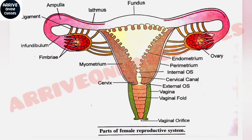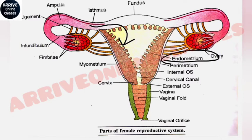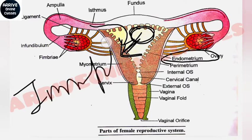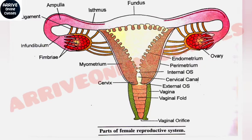The developing embryo is then implanted into the endometrium wall of the uterus. When the embryo is made, it is fixed into this wall. We call this the implantation process. Implantation is the fixing of the developing embryo into the wall of the uterus.